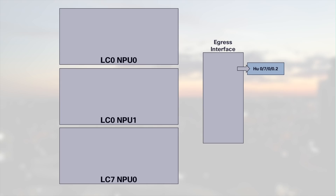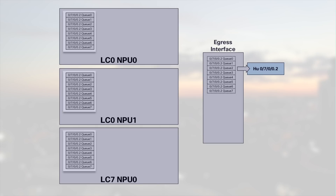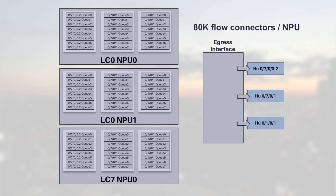The virtual output queues exist in all the ingress NPUs. For example, with the interface 100GbE 0/7/0/0.2, the queues are present in linecard 0 NPU 0, linecard 0 NPU 1, and linecard 7 NPU 0. And that will be the same for every output port, like 100GbE 0/7/0/1 or 100GbE 0/1/0/1. Each ingress NPU supports 96,000 queues, but we actually use around 80,000 flow connectors. The number of queues used is the total number of logical ports multiplied by 8, and they are duplicated on all ingress NPUs.